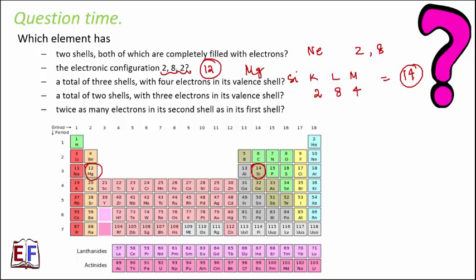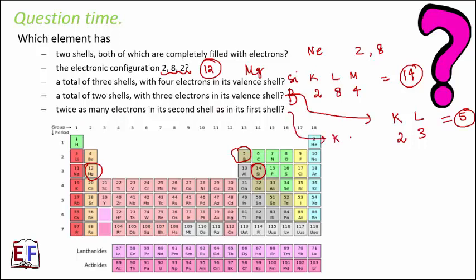A total of 2 shells with 3 electrons in the valence shell: the first shell K can hold a maximum of 2 electrons, so total electrons = 2 + 3 = 5. Atomic number 5 is boron. Next: twice as many electrons in its second shell as in its first shell. The first shell K has 2 electrons, so the second shell has 4. Total = 2 + 4 = 6. Atomic number 6 is carbon.